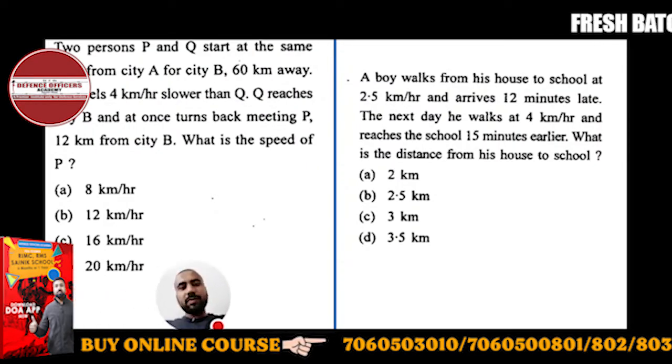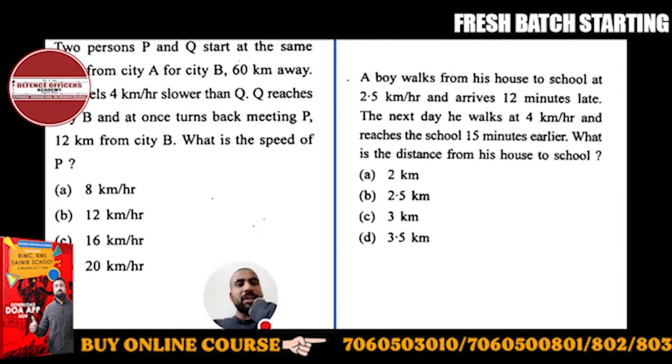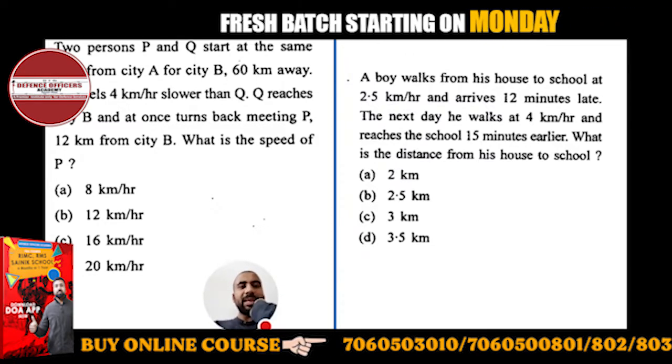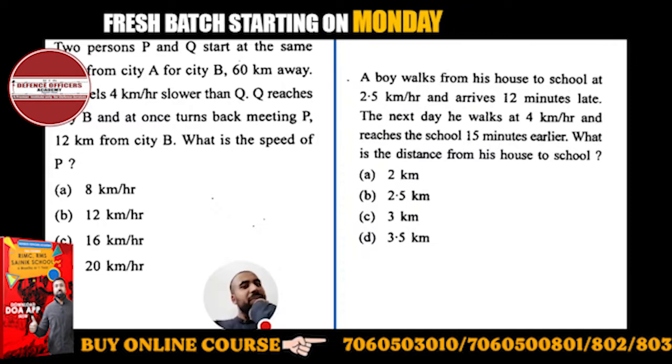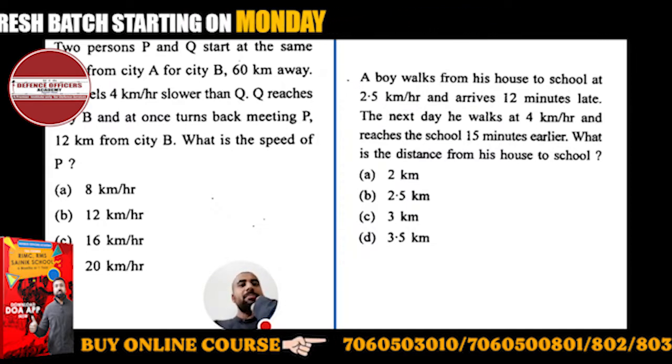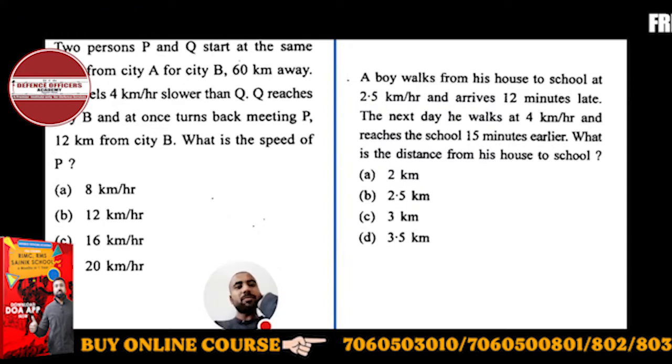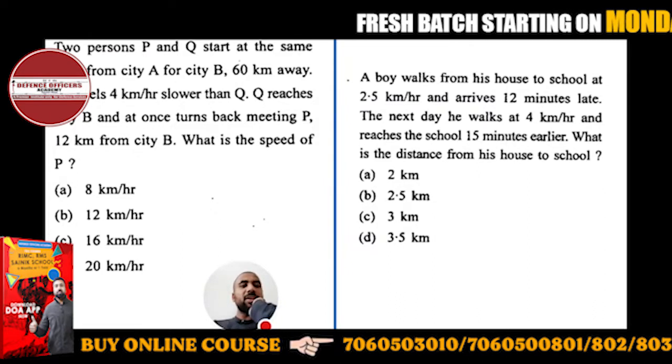Okay, now what is the next question? Two persons P and Q start at the same time from city A for city B, 60 kilometers away. P travels 4 kilometers per hour slower than Q. Q reaches city B and at once turns back, meeting P 12 kilometers from city B. What is the speed of P?